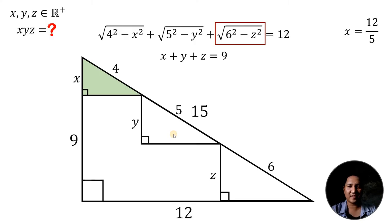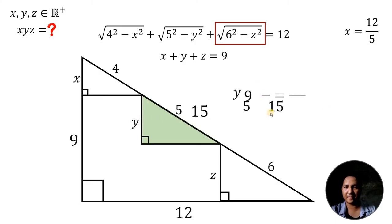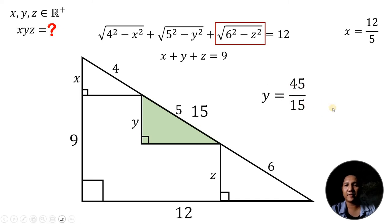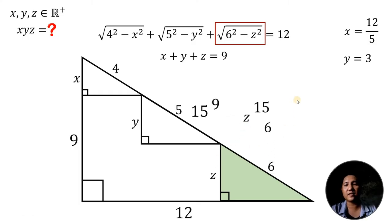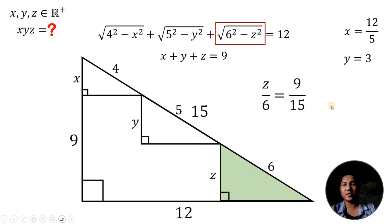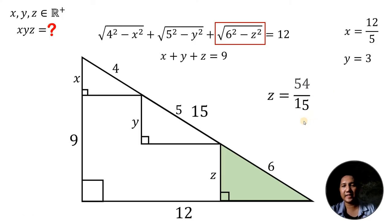For the value of y, using the right triangle with hypotenuse 5: y over 5 equals 9 over 15. Multiplying both sides by 5 gives 45 over 15, which equals 3. So y equals 3. For z, using the right triangle with hypotenuse 6: z over 6 equals 9 over 15. Multiplying both sides by 6 gives 54 over 15, which simplifies to 18 over 5. So z equals 18 over 5.